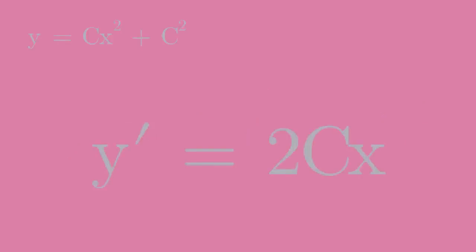the arbitrary constant C is still present in the first derivative. This time replace C in the last equation by the expression taken in the new equation. Divide both sides by 2x.